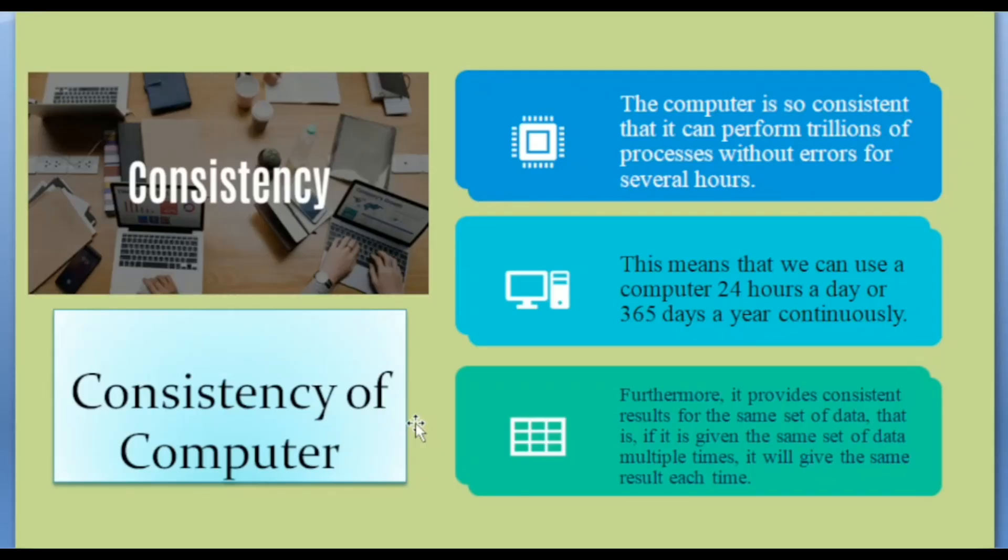Next is consistency of a computer. Computer can perform trillions of processes without errors for hours. They can be used continuously for 24 hours a day, 365 days a year, like supercomputers, providing consistent results for the same set of data. That means if we provide the same instruction, we are getting same data every time, not different output in different times.